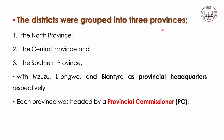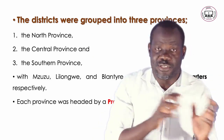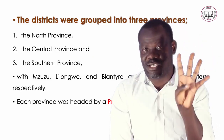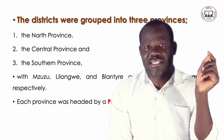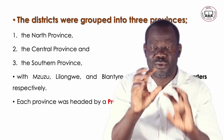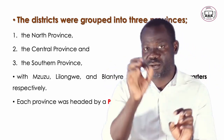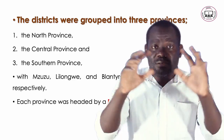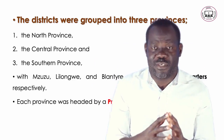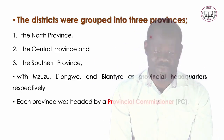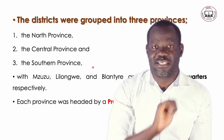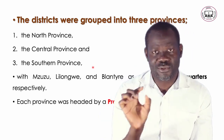The districts were grouped into three provinces. All those smaller districts — Chitipa, Karonga, Mwanza, Chikwawa, Nsanje, as we know them today — were grouped into three provinces: the northern province, the central province, and the southern province. Today we call them the northern region, central region, and southern region, a structure started by the colonial administration.